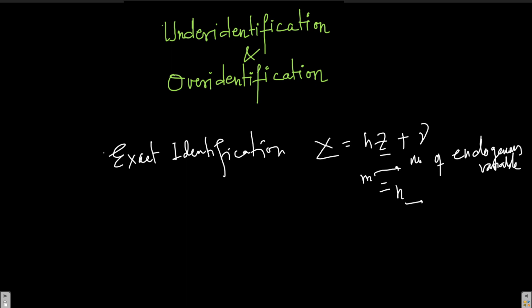Where n is the number of instruments. In this equation we can see I have one endogenous variable, x, and one instrumental variable, z — my number of endogenous variables equals the number of instruments. So this is a case of exact identification. From this definition, we can clearly make sense of what could be a case of under-identification and what could be a case of over-identification.